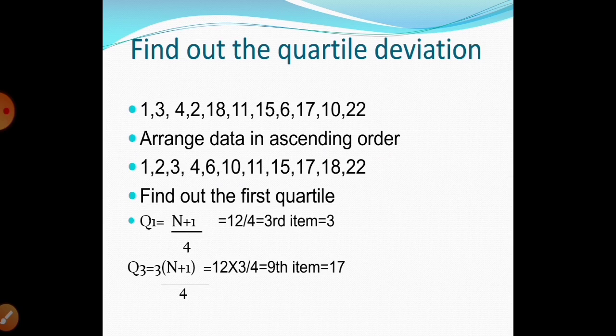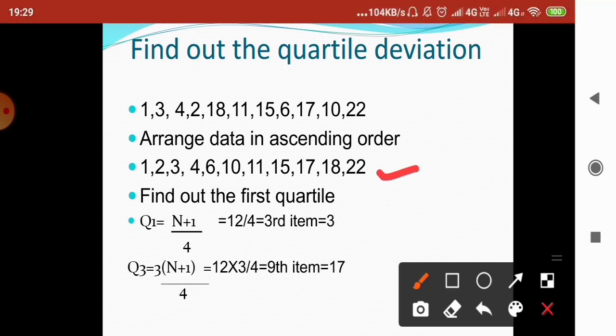Let us see an example. The data is: 1, 3, 4, 2, 18, 11, 15, 6, 17, 10, and 22. First, we arrange the data in ascending order: 1, 2, 3, 4, 6, 10, 11, 15, 17, 18, and 20.